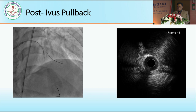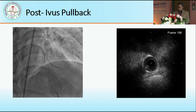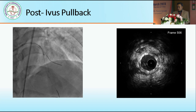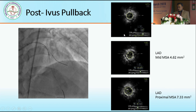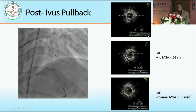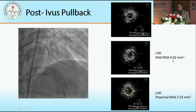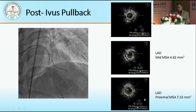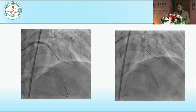After post-dilation, the IVUS pullback shows the stent is well apposed with no under-expansion or malapposition. In this picture we can see the distal MSA is 4.1, proximal LAD minimal stent area is 4.6, mid-LAD is 4.6, and proximal LAD is 7.3 mm squared. We can appreciate that the result is good.